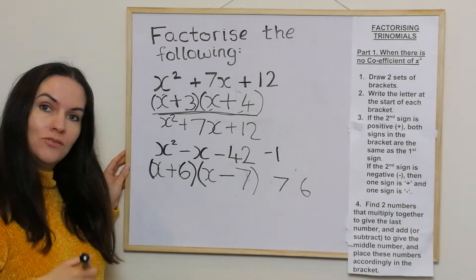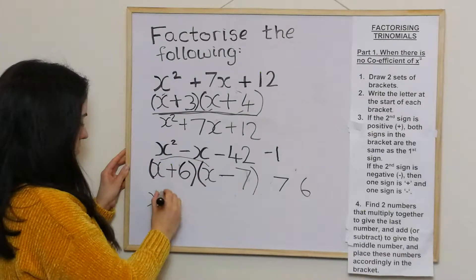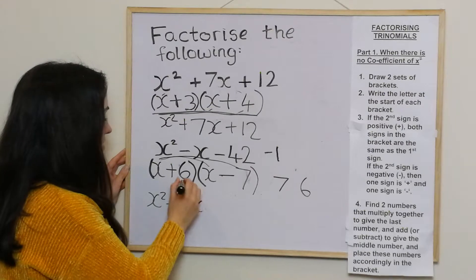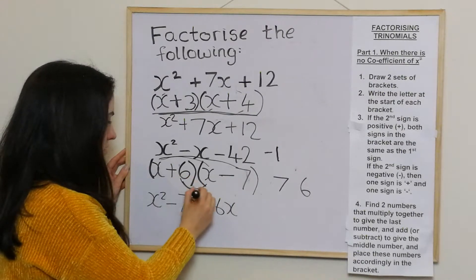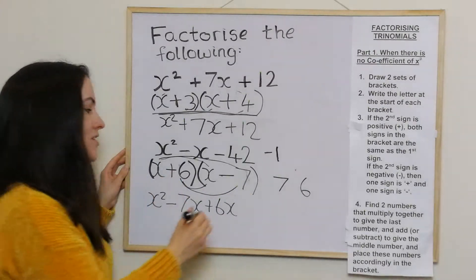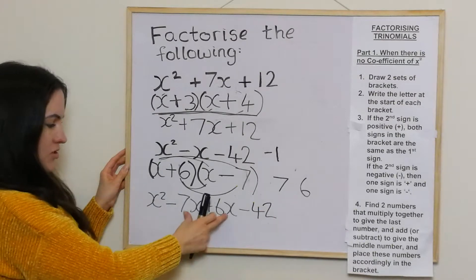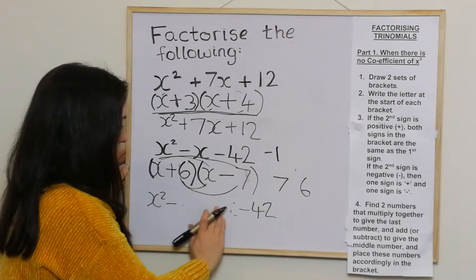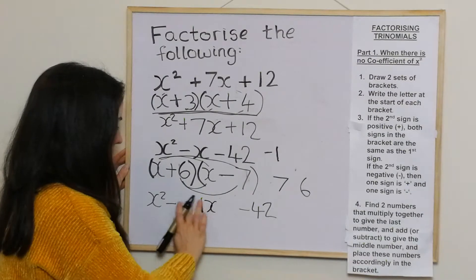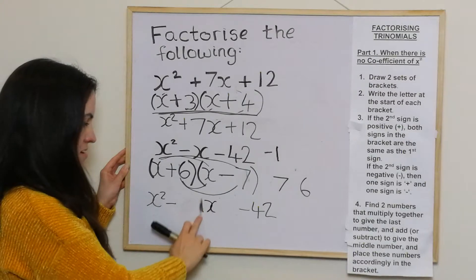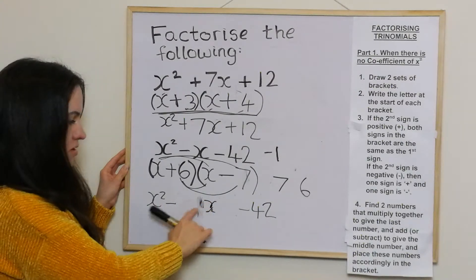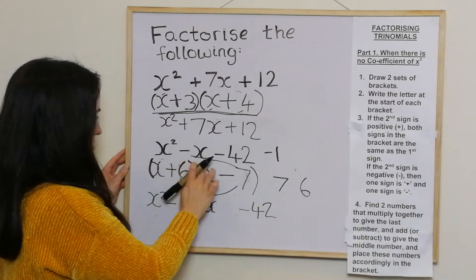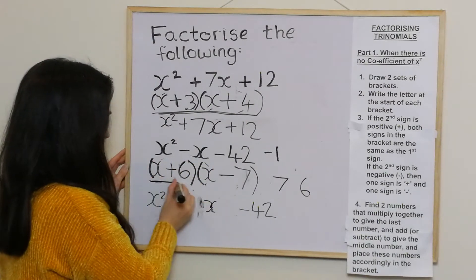Multiplying out to prove: x times x gives x squared, then minus 7x, then positive 6x, and positive 6 times negative 7 gives negative 42. Negative 7x add 6x gives negative 1x — so negative x. Altogether: x squared take away x take away 42, which matches our original expression. That's the answer.